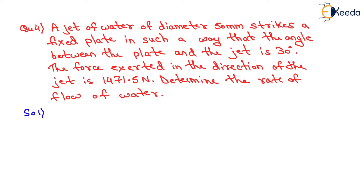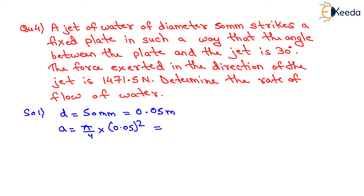We will write the given quantities. The first one is diameter of jet, that is 50 mm, which we convert to 0.05 meter. We calculate the cross-sectional area of the nozzle as pi by 4 into d squared, that is 0.05 meter whole squared, which gives 0.001963 meter square. The angle between the jet and the plate is theta equals 30 degrees, and the force in the direction of the jet, Fx, is given as 1471.5 Newton.